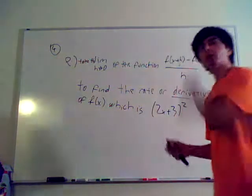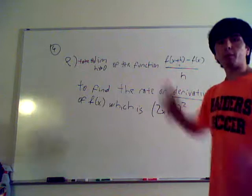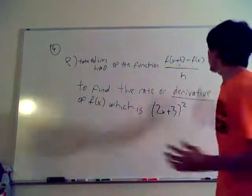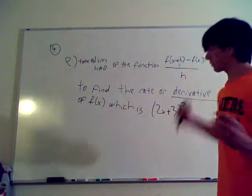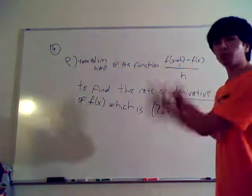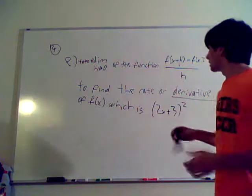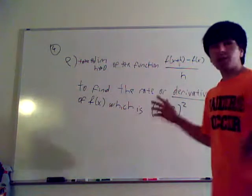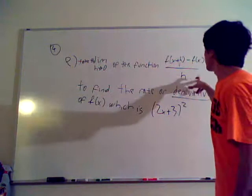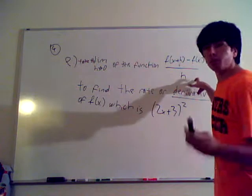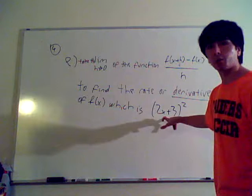The limit of the function, write d1, f of x plus 1, or h, minus f of x over h, to find the rate for derivative, bonus point, trust me, of f of x, which is 2x plus 3 squared. All right. So, what I just wrote here, the limit, remember what I said before, is the formal way of finding a derivative. Later on, you're going to find a way that is much easier to find derivatives and much quicker. This problem will literally take you two seconds. Like, I'm serious.